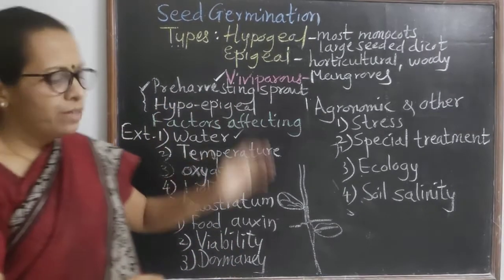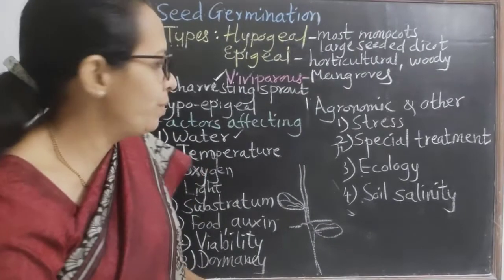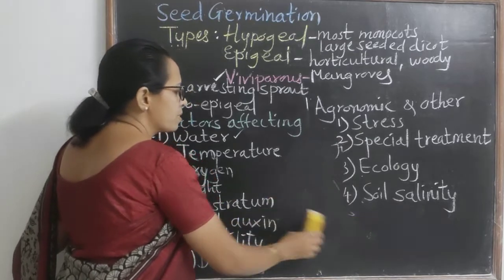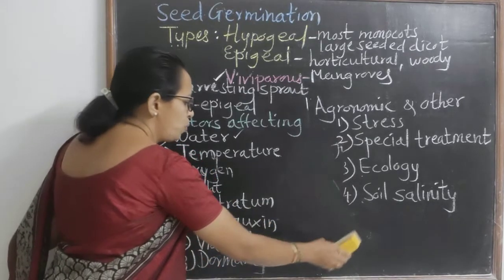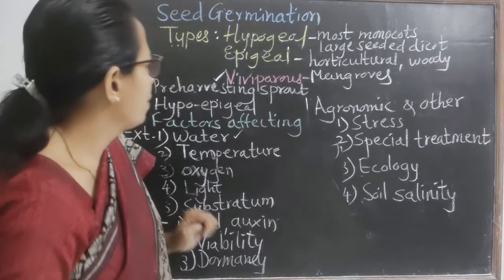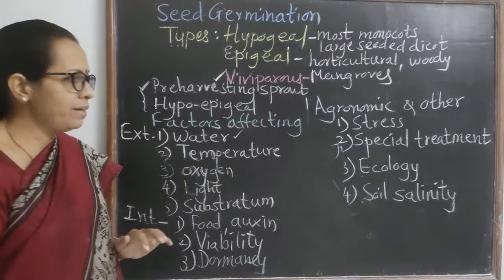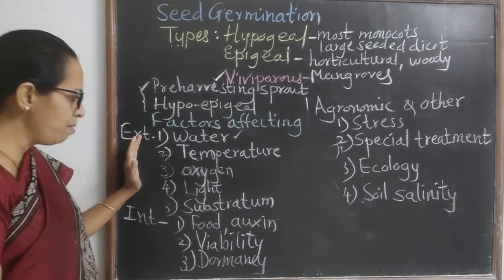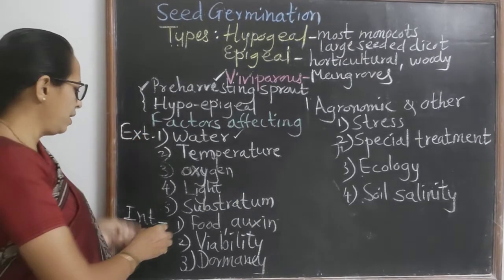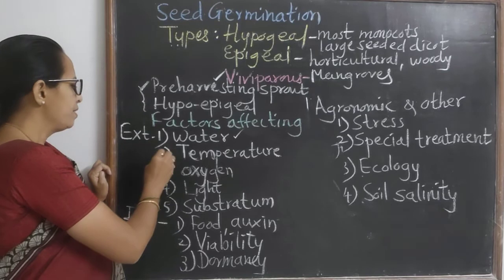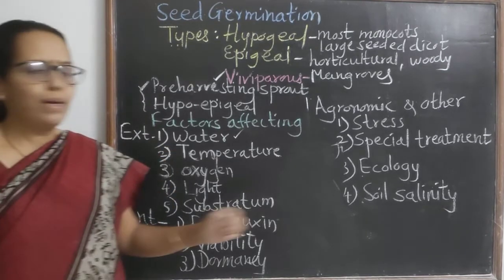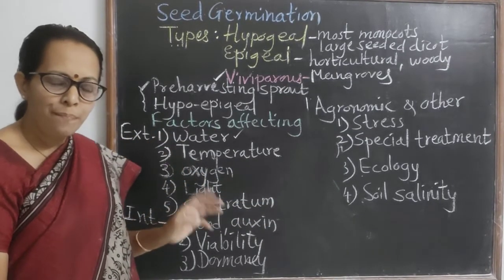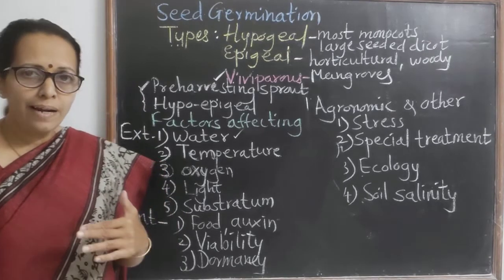Next, we will deal with the factors which affect the process of germination. Some factors are considered external factors, some are internal factors, and some are agronomic or other category factors. We will see all these factors one by one.